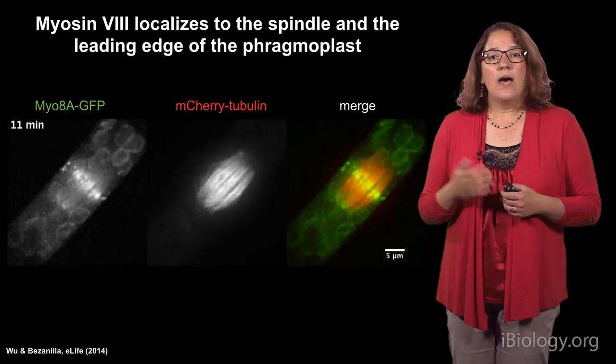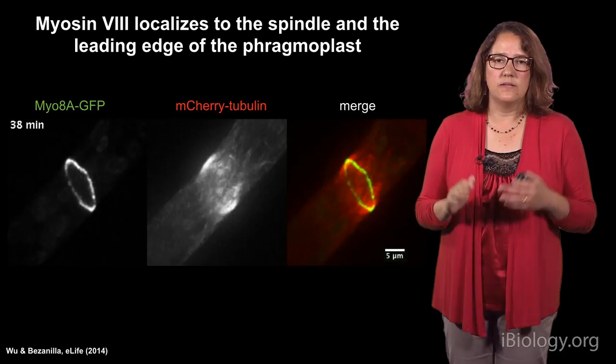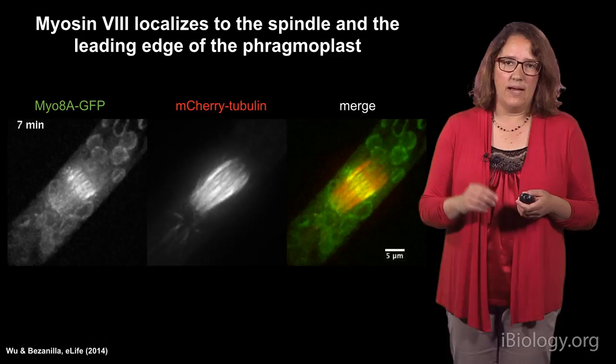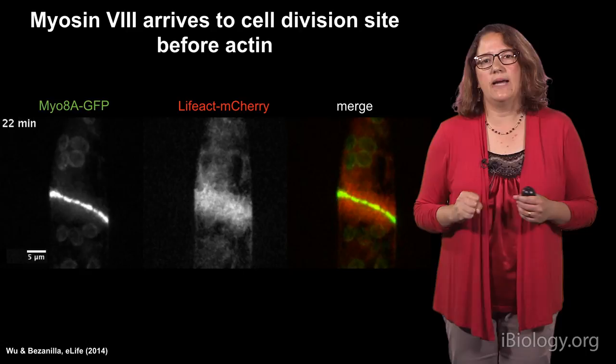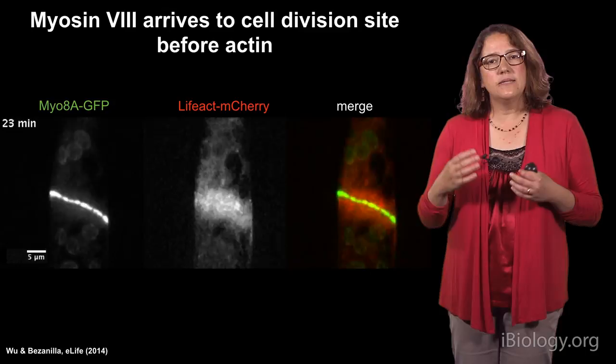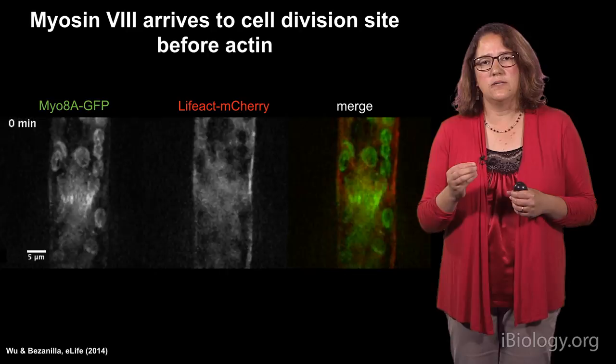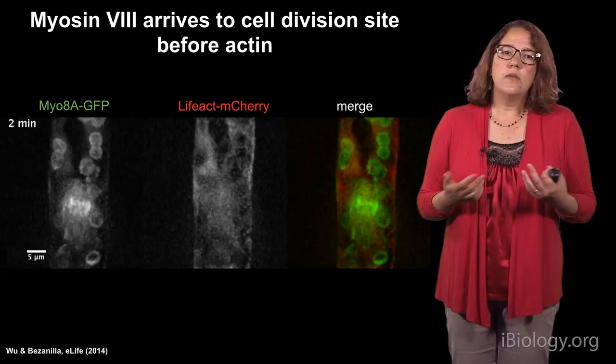We wanted to ensure that actin really isn't in the mitotic spindle, because maybe it is in these cells and we hadn't looked carefully enough. We looked at a line that had both myosin 8 and actin labeled. What you can see is that myosin 8 localizes to the spindle, but it's only when it turns into that very narrow band that actin appears. Before then, actin is not accumulating. So actin is not in the mitotic spindle, but it seems to appear right when the spindle transitions into the phragmoplast — which is so important for generating the new cell plate.